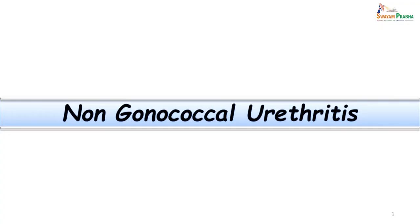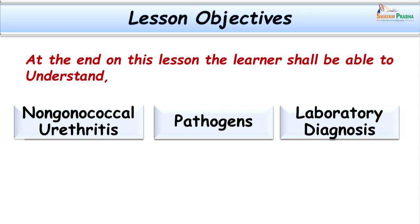Hello and welcome to this class. In this class we are going to study yet another important clinical condition which is going to produce morbidity in the sexually active population, that is non-gonococcal urethritis. The objectives are that we are going to learn about non-gonococcal urethritis, the causative agents, and how do we proceed with the lab diagnosis of such conditions.